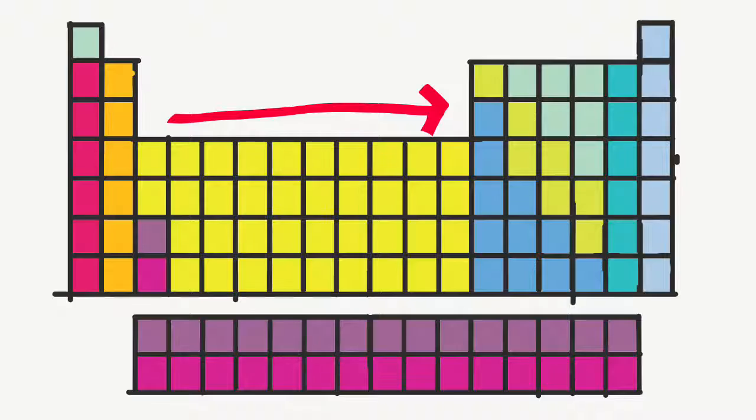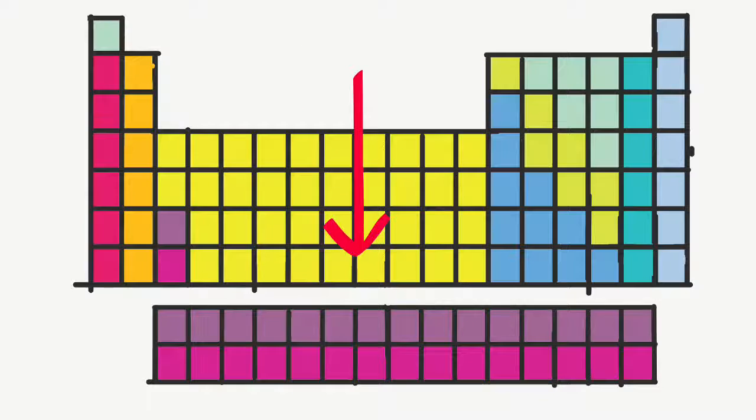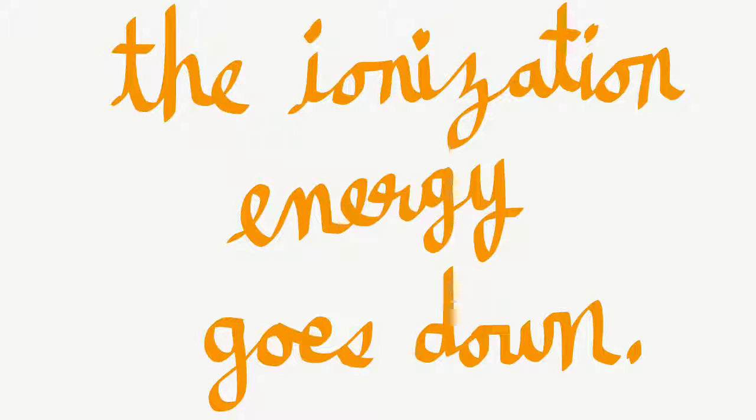When you go across a period, the ionization energy goes up, and when you go down a group, the ionization energy goes down.